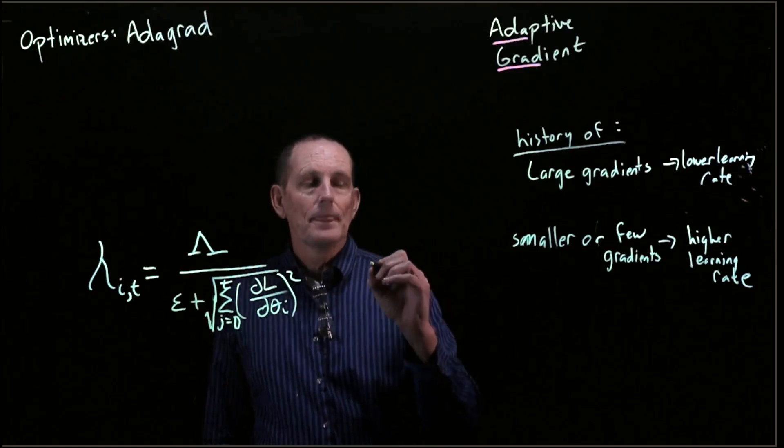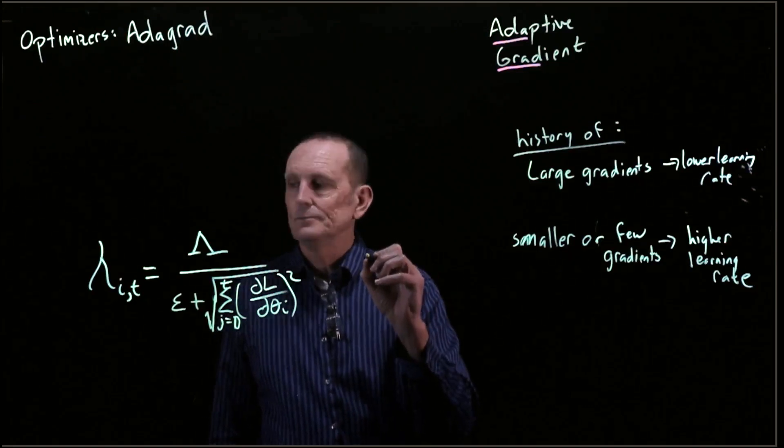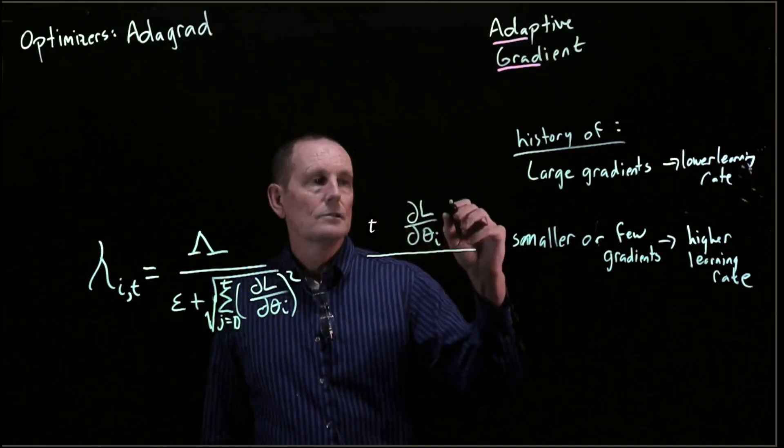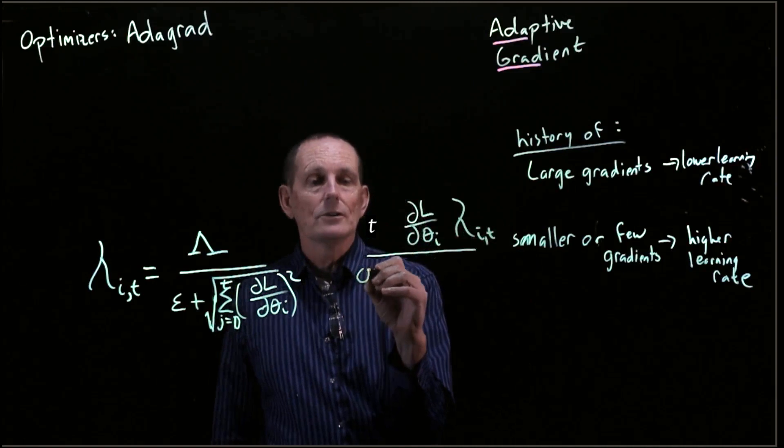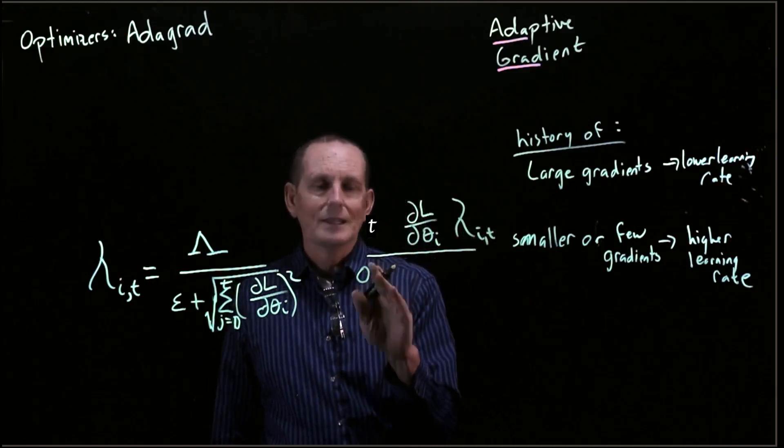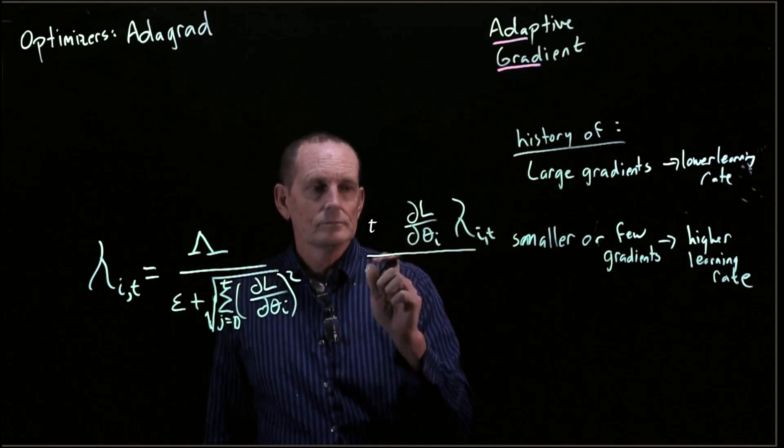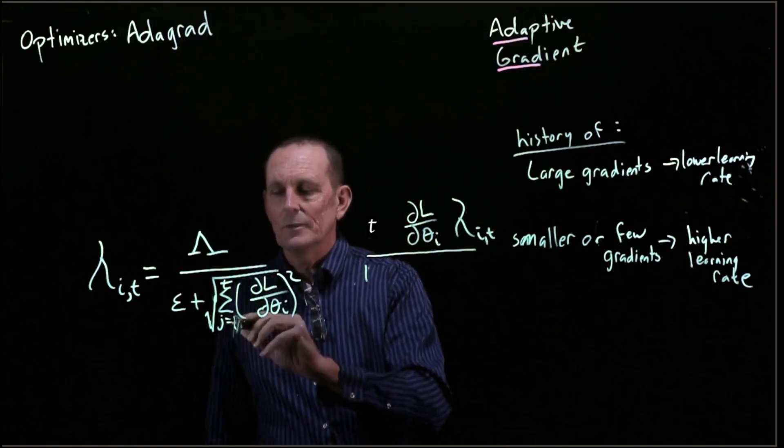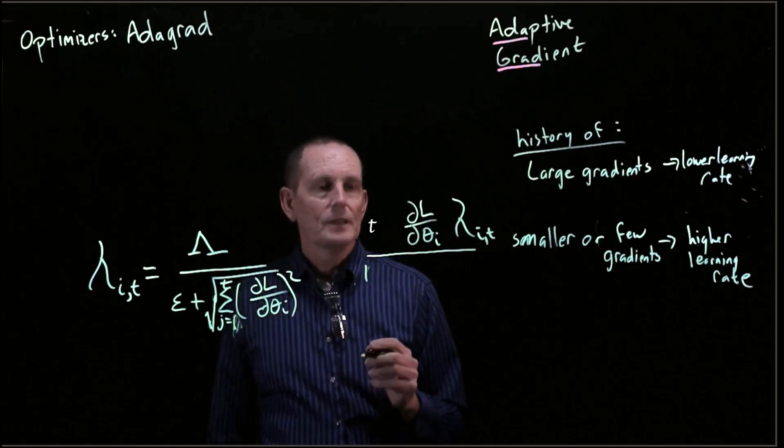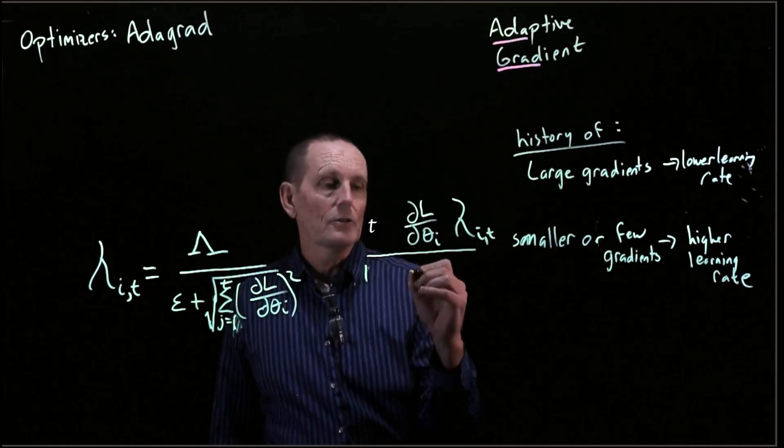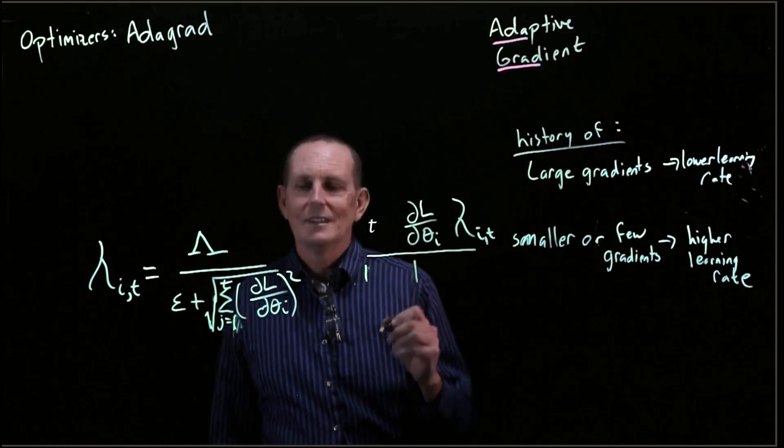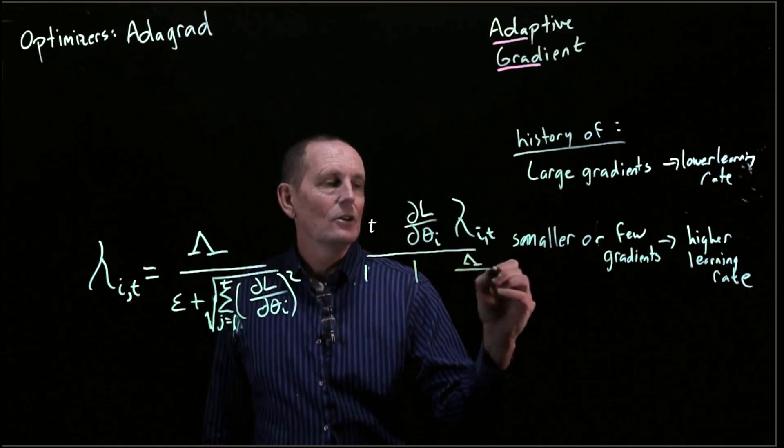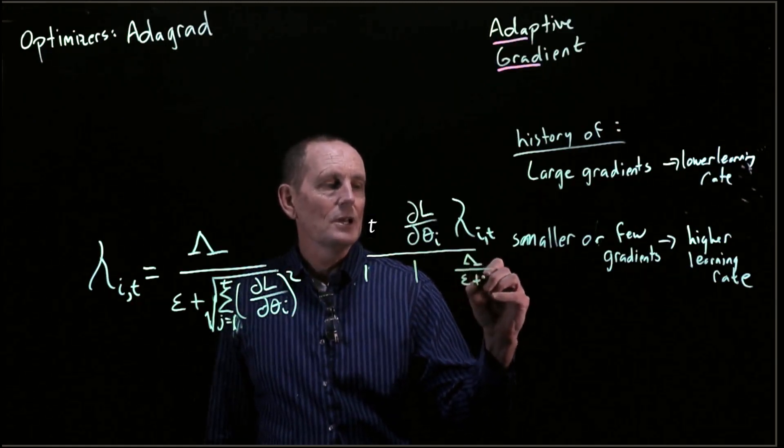For example, if we have some gradients, so at time 1, because that's going to be when we have our first gradient, let's say our gradient is 1.